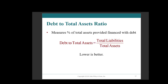Our first item is debt to total assets. What is your total debt and what are your total assets? Lower is typically better, because you do not want to have a lot of liabilities and no assets.